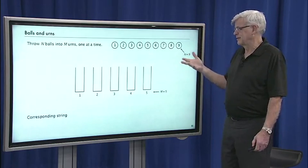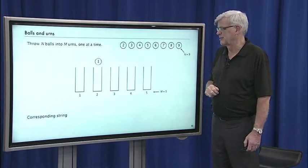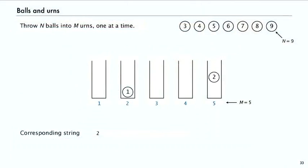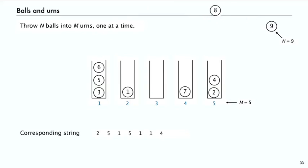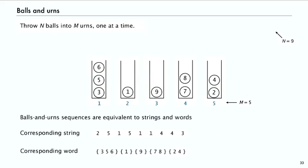Another way to look at the same thing is the balls and urns model, which is classical in combinatorics. If we have N labelled balls and we throw them into M urns, when ball i goes into urn j, that means the i-th character in the string is j. When five goes into urn one, we just write a one in the string. Balls and urns sequences are equivalent to both strings and words. We don't care about the order in which the balls are in the urns—they're sets of indices.